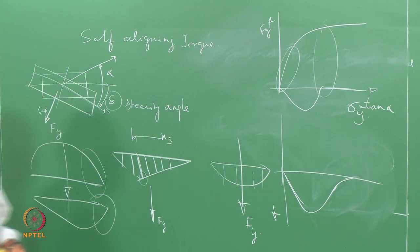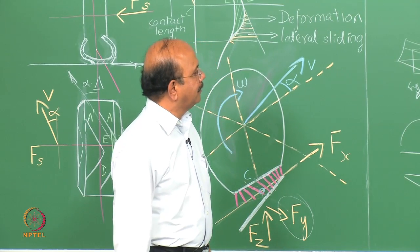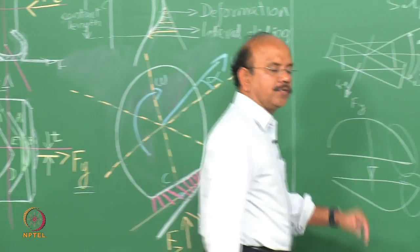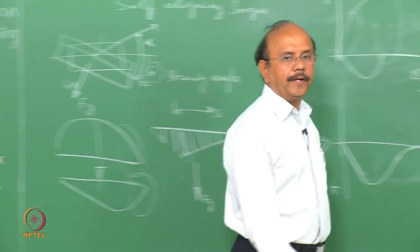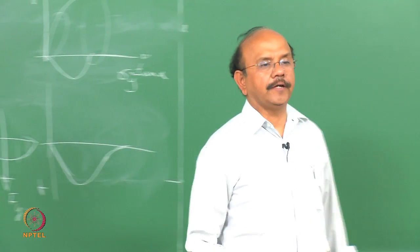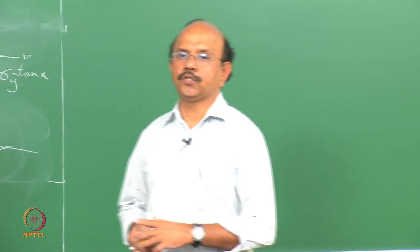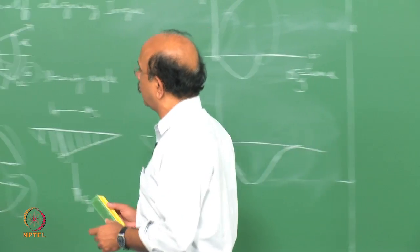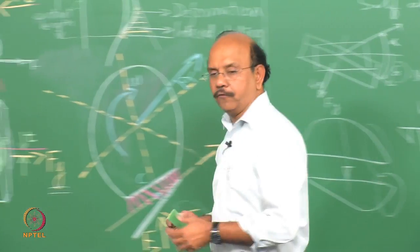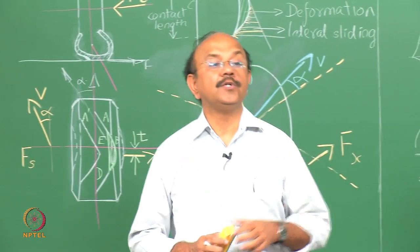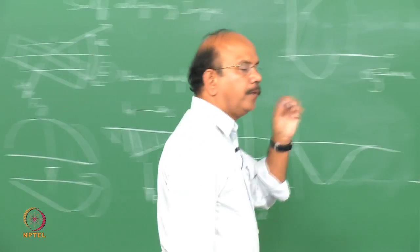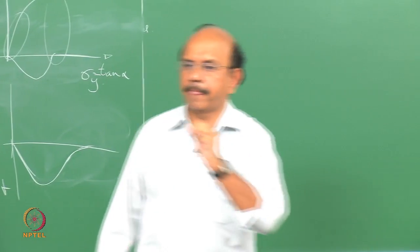We will now look at a simple mathematical model to understand the derivation for Fy, Mz, as well as Fx. Let us look at a situation where we are going to have both the longitudinal force as well as the lateral force - in other words, braking while cornering, a common thing that could happen.